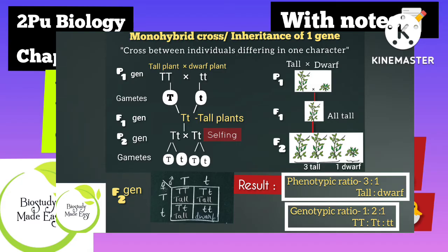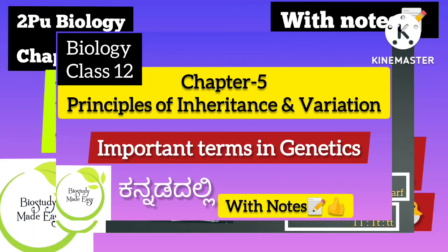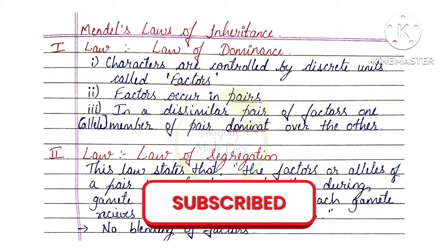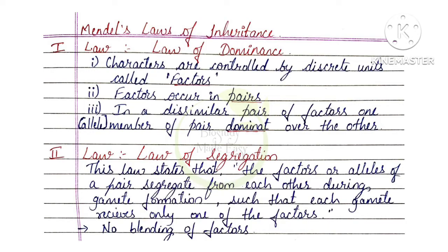Monohybrid Cross and important terms which come in this chapter. These are the Laws of Inheritance given by Mendel. Mendel's Laws of Inheritance: 3 laws — from Monohybrid and Dihybrid Cross experiments — Mendel gave 3 laws. So these 3 laws are very important. Let us study. So let us start.